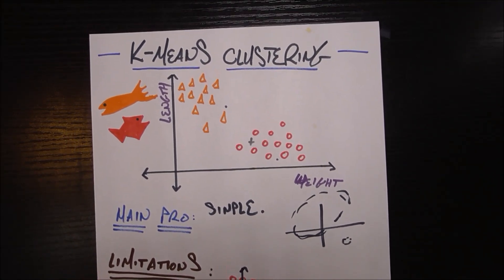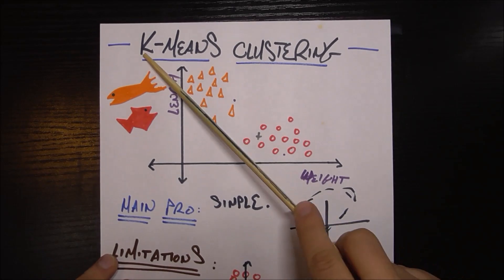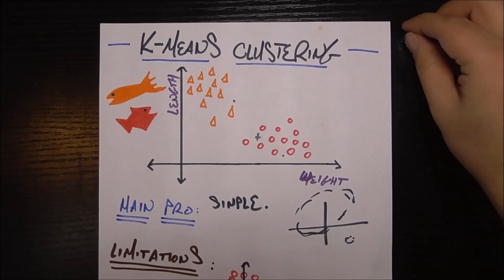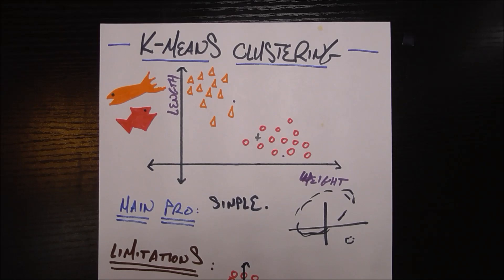And of course, another problem we noticed in the beginning of the video was you need to know this k beforehand. This doesn't really find the k for you. There are other algorithms that will find the k, but this is not one of them. So you need to know how many classes you want beforehand, which isn't always practical.